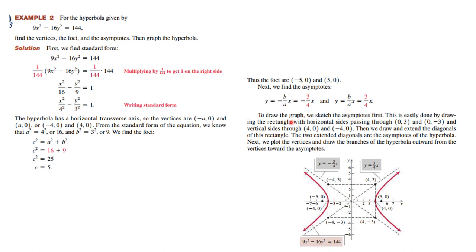The asymptotes I find this way, minus b over a x and b over a x. So I get these lines. So I can draw the dotted lines. I can plot the vertices. I can plot the foci and I can draw the curve.